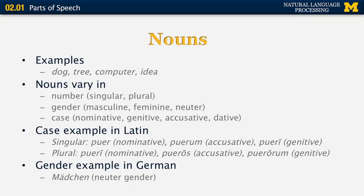Grammatical gender doesn't need to match the actual sex of the object being described. A typical example is the German word 'Mädchen,' which means 'girl.' Because it's a diminutive — the '-chen' suffix indicates a small person — the word is neuter in gender in German, even though it refers to a female person.